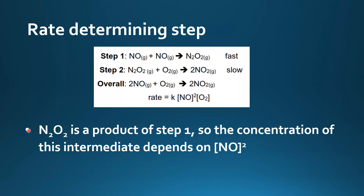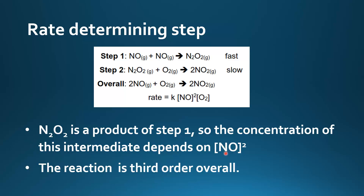N₂O₂ is a product of step 1, so the concentration of this intermediate depends on the concentration of nitrogen monoxide. Therefore, the reaction is third order overall.